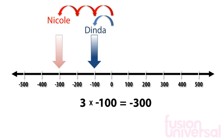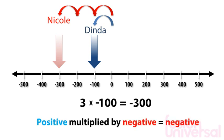A positive number multiplied by a negative number gives a negative answer.